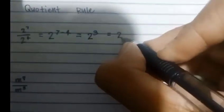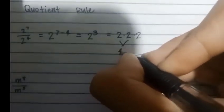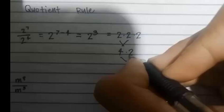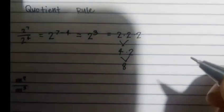So 2 three times. 1, 2, 3. 2 times 2 equals 4, 4 times 2 equals 8. So the answer is 8.